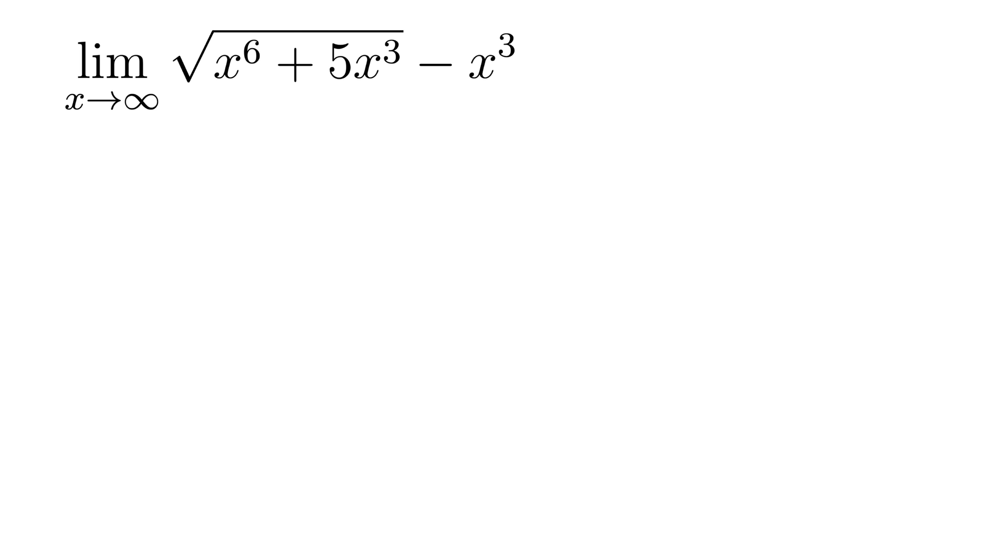Now the first thing we might want to do here is just plug in infinity for x or just let x run out to infinity. But note that if we do that, we get infinity minus infinity, which is an indeterminate form. We can't say what that is. It certainly isn't necessarily just zero.